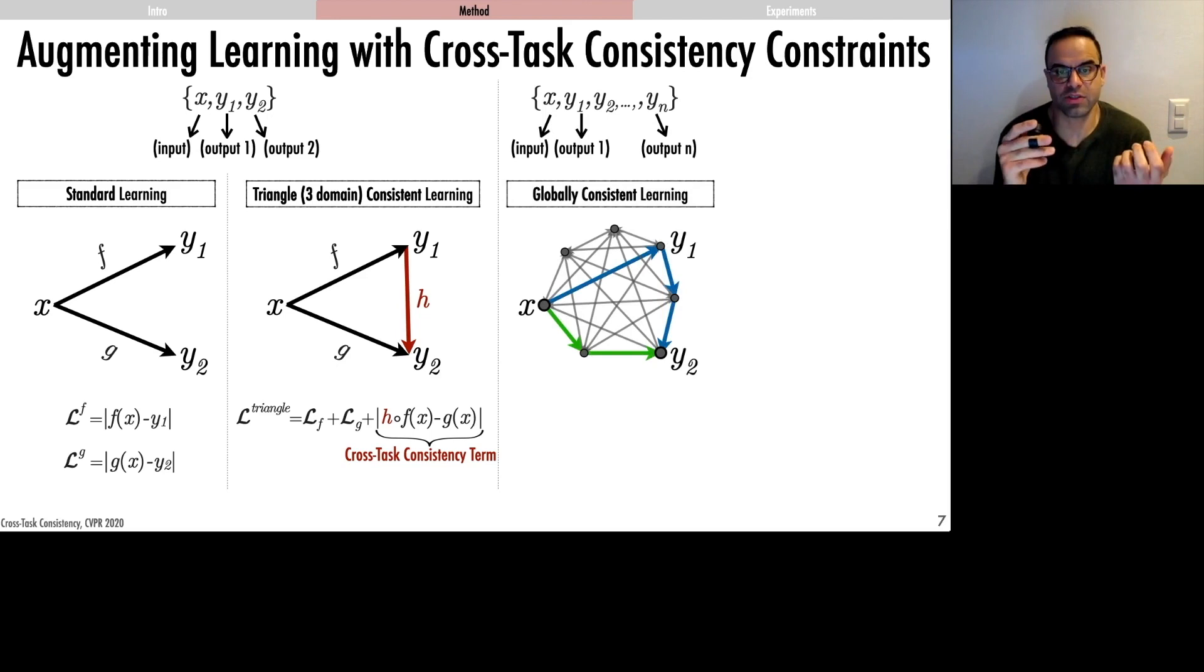Then, in the paper, we discuss how we can efficiently optimize for a globally cross-task consistent system, which satisfies the consistency constraint for all feasible paths in task graph.